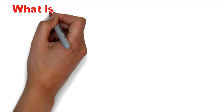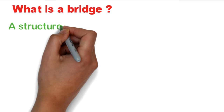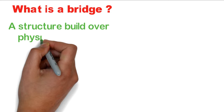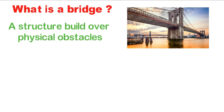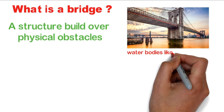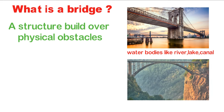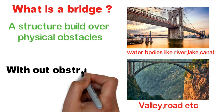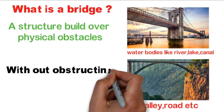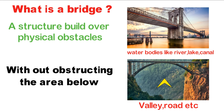What is a bridge? A bridge is a structure built over physical obstacles. Obstacles may be water bodies like river, lake, canal, or valley, road, etc. The main purpose of a bridge is that traffic can flow without obstructing the area below.